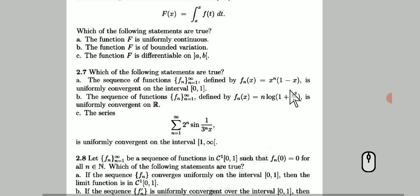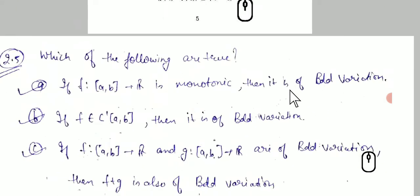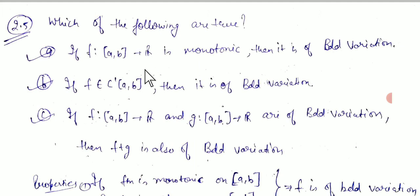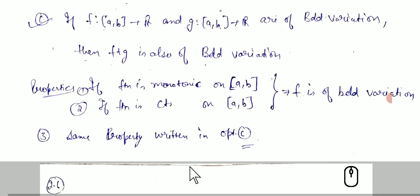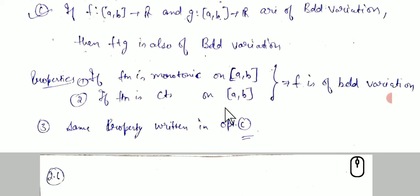Question 2.5 is about bounded variation. The three direct properties are: if f on [a,b] to ℝ is monotonic, then it is of bounded variation; if f belongs to C¹[a,b] (continuously differentiable), then it is of bounded variation; and if both f and g on [a,b] are of bounded variation, then their sum is also of bounded variation. These are direct properties to memorize.